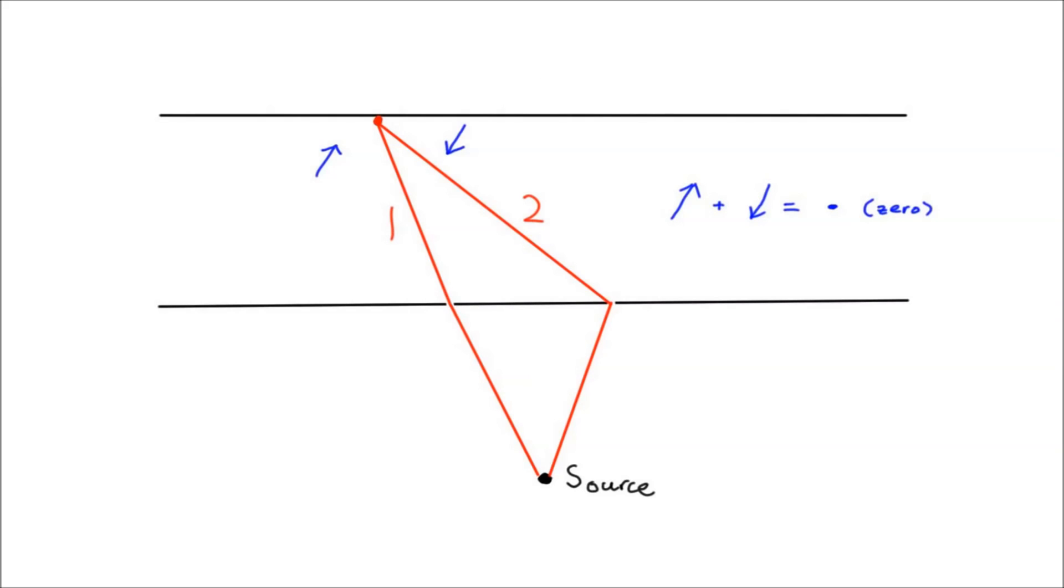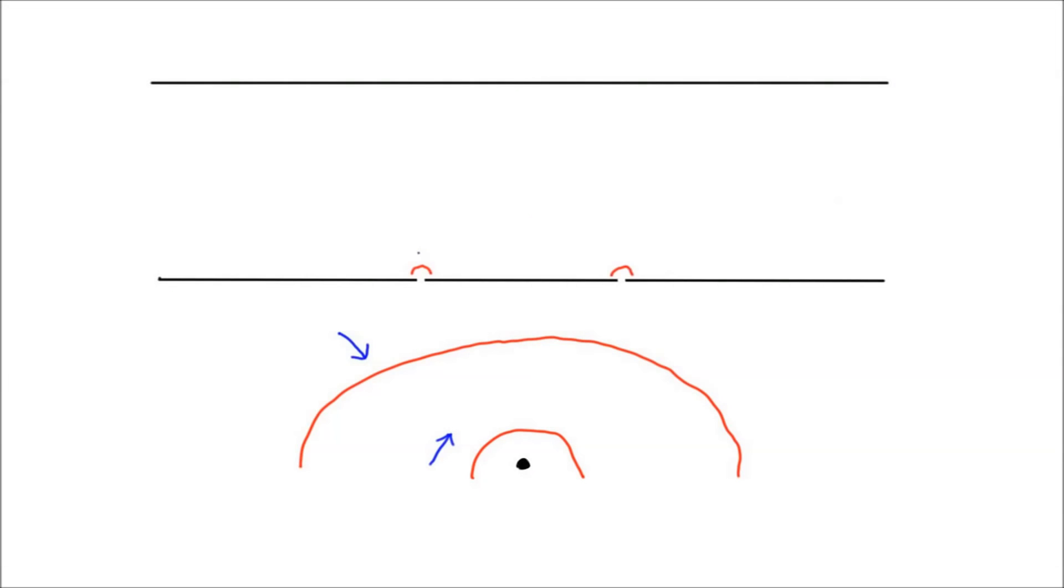Interestingly, we can actually translate our quantum interpretation into the wave-based one used to explain the results of this experiment originally. If we consider the up-down component of the arrows for each slit to be the height of a wave along each path, we see that the arrows, and thus the wave heights, oscillate as we move down the path from each slit to the screen.